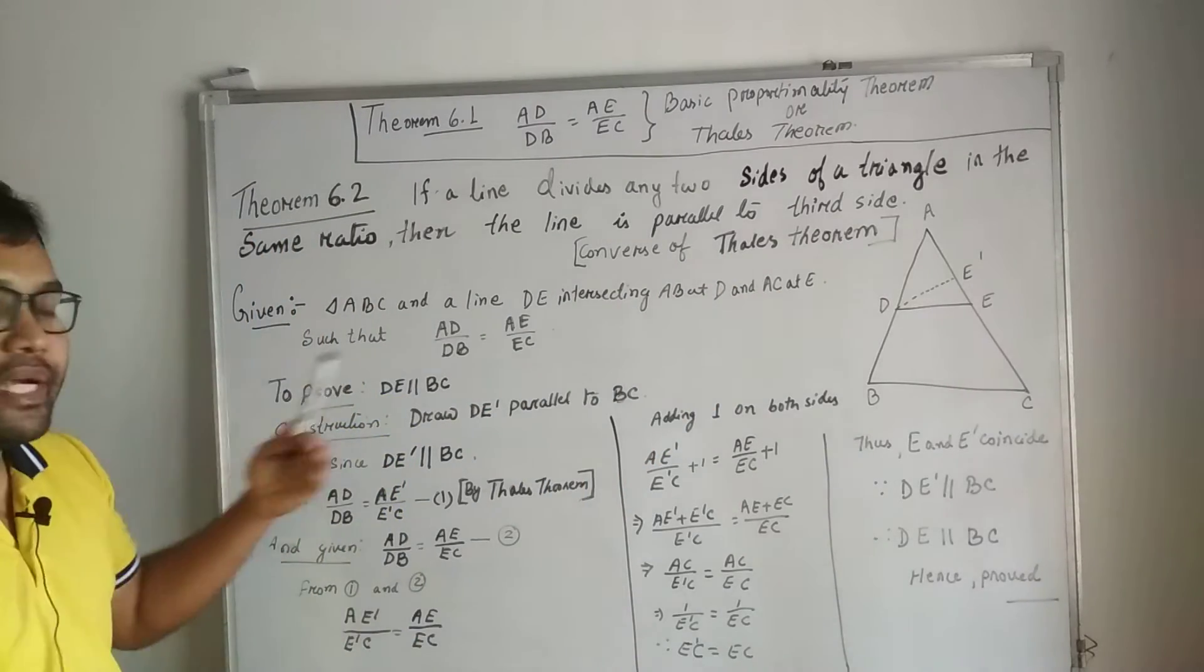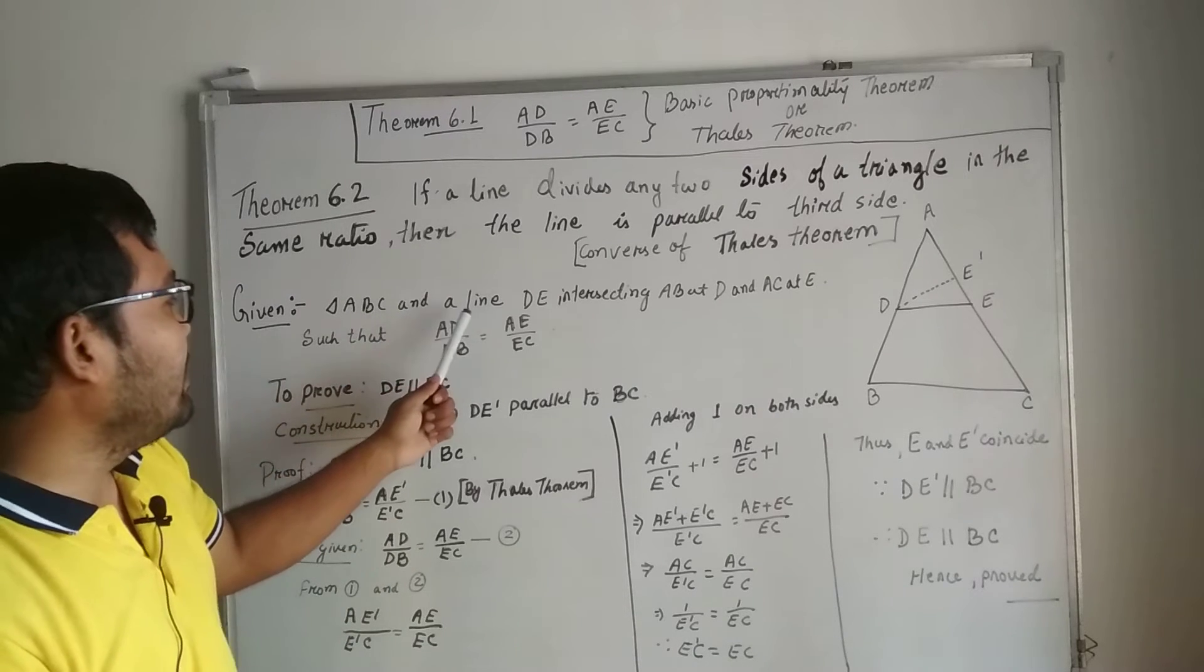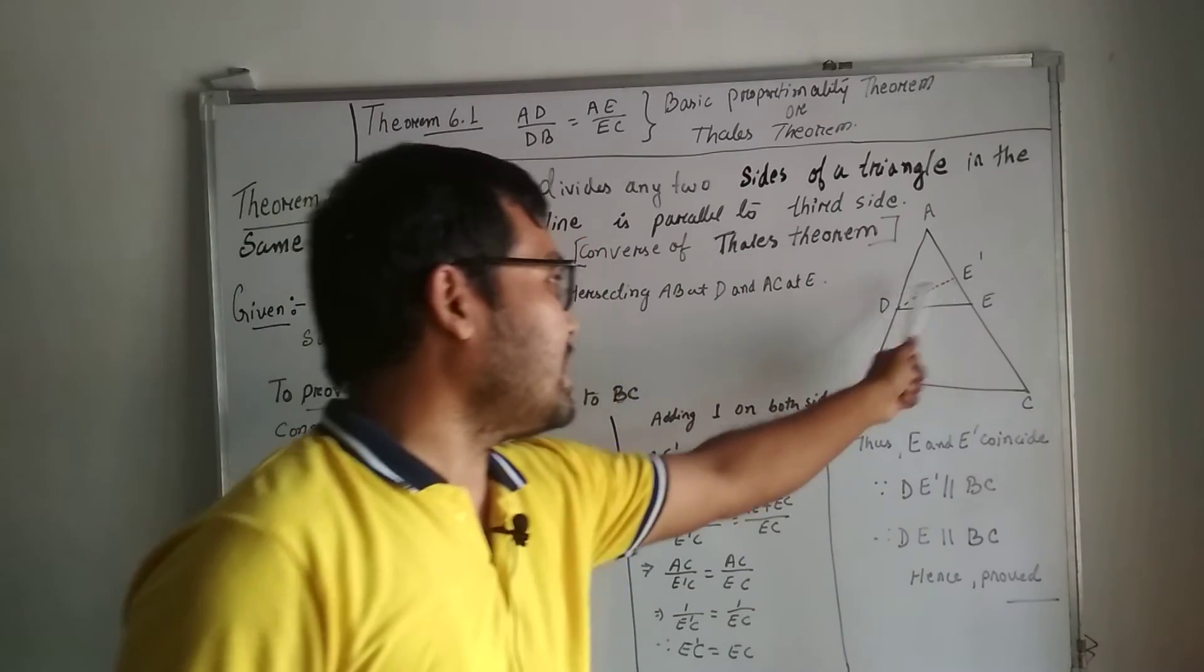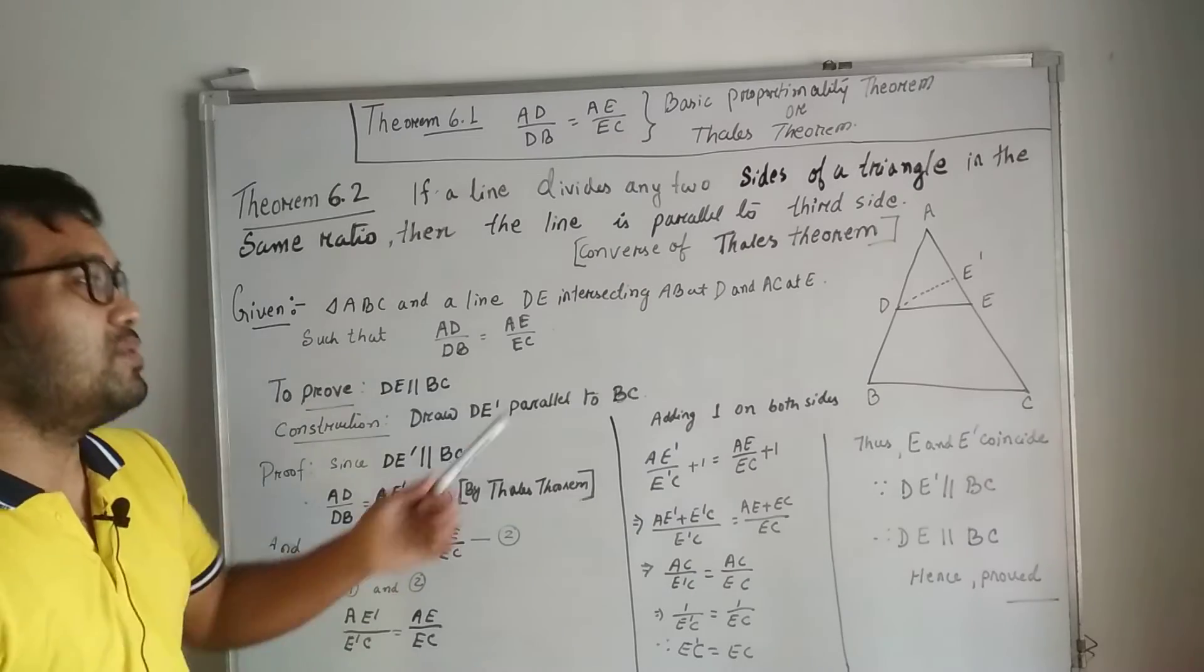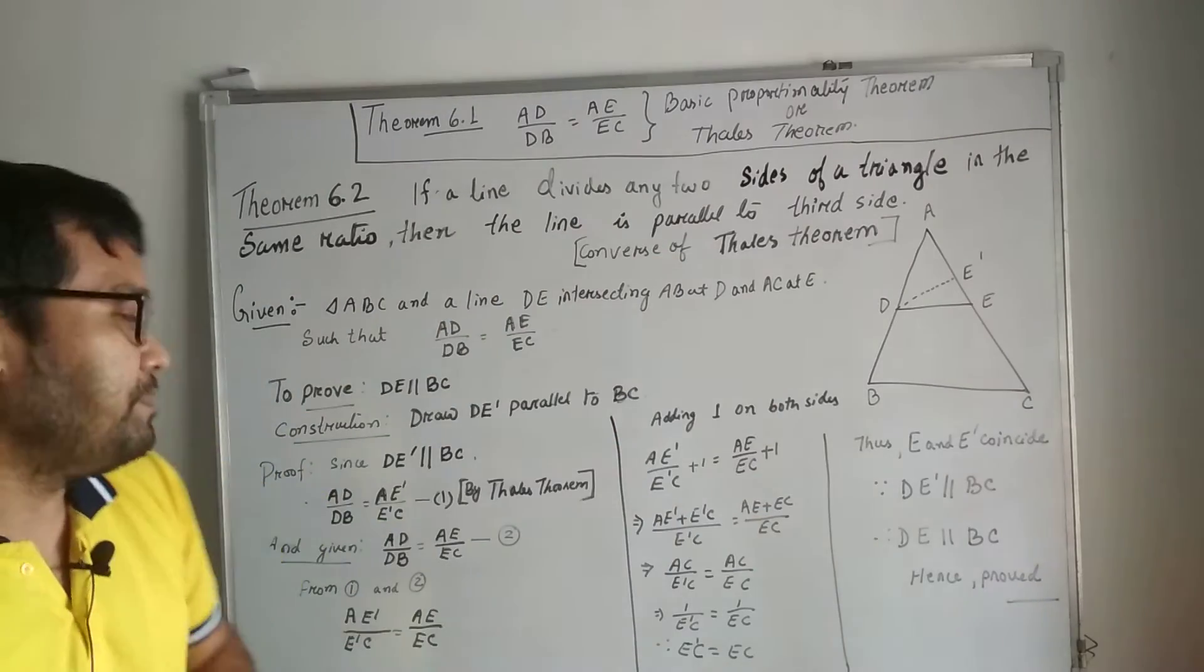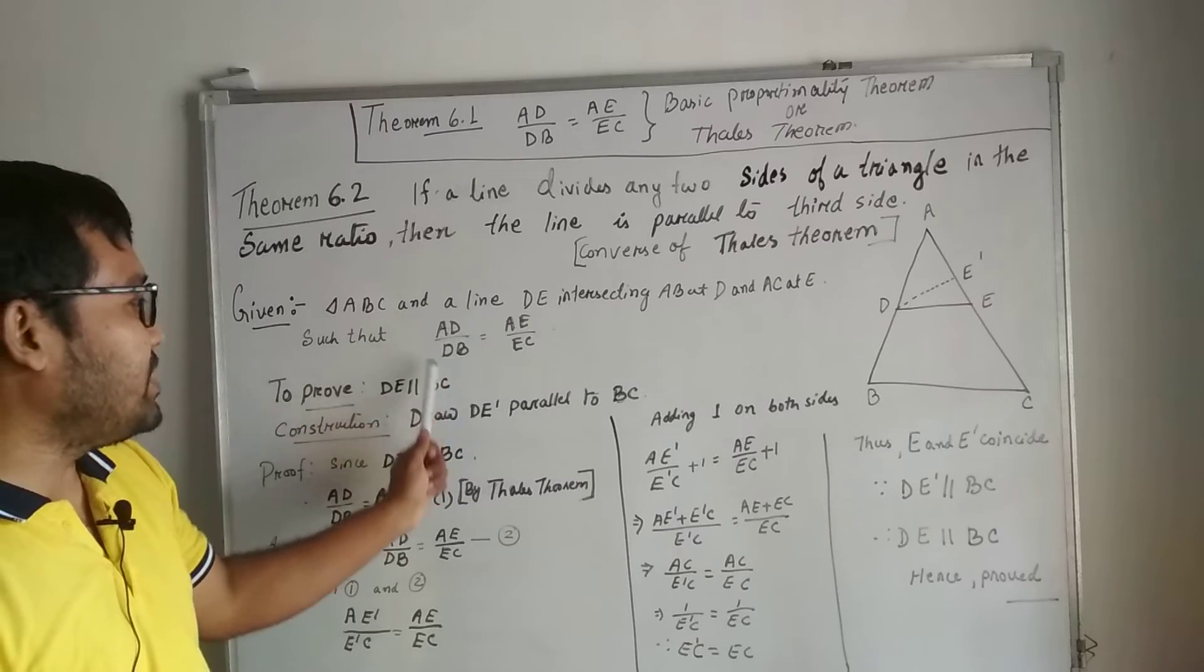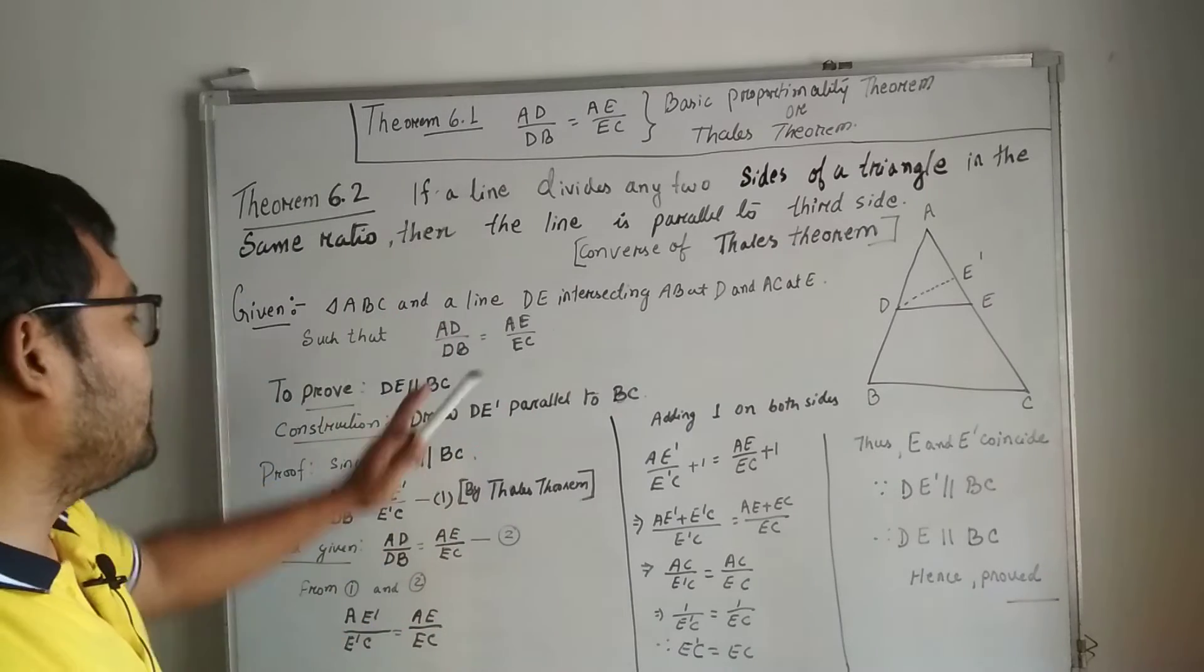What is given? Triangle ABC and a line intersecting AB at D and AC at E. ABC is a triangle, D and E are the two points intersecting AB and AC. They are in the same ratio: AD by DB equal to AE by EC. This is given.